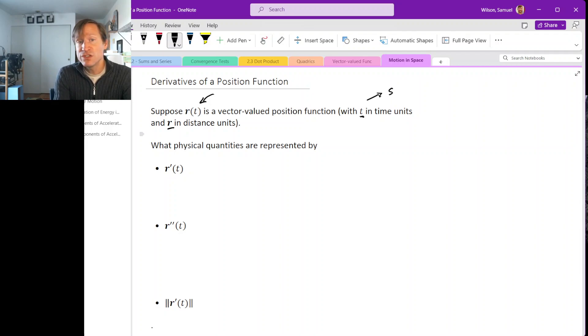And the units for the coordinates of our vector-valued function have to be distance units, so that we're describing position relative to some fixed point that's going to count as the origin of our coordinate system. So we have some object moving around through space.